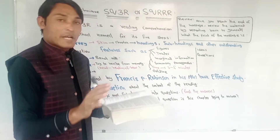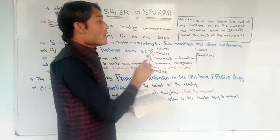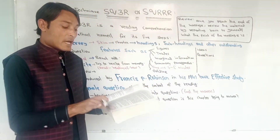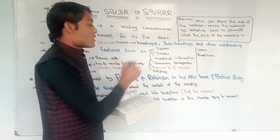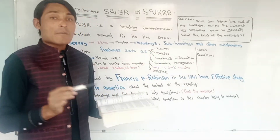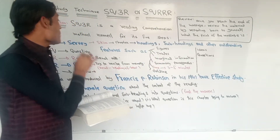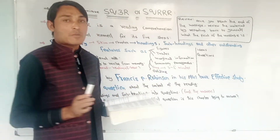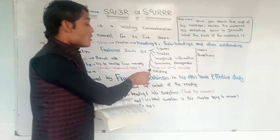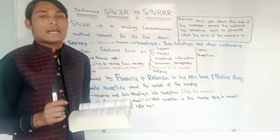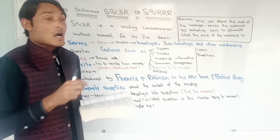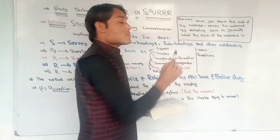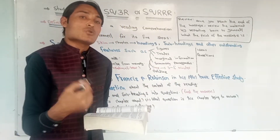In the Survey step, you read the headings and sub-headings. For example, you look at figures, numbers, diagrams, tables, and summary paragraphs. Skimming is basically surveying. This step takes about 5 minutes and gives you an outline or framework of what you expect to find, helping you identify the main ideas and key questions.